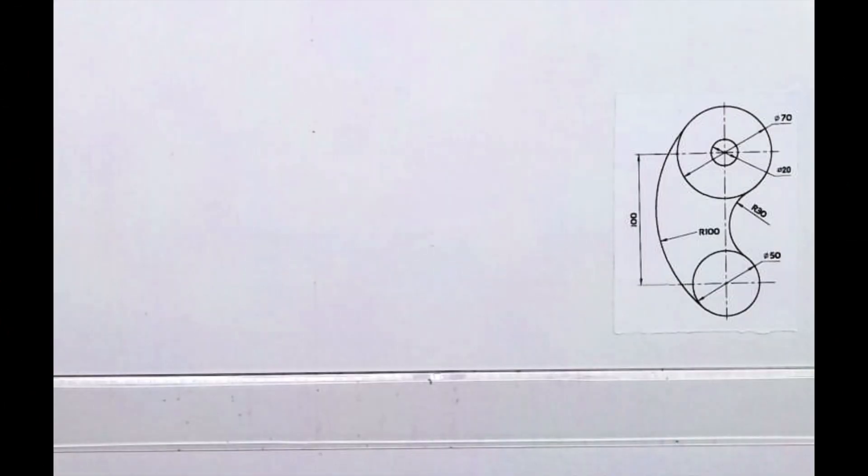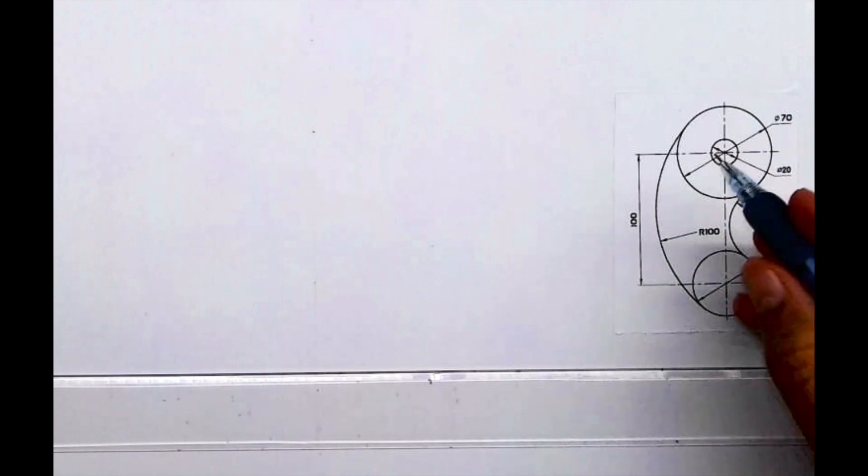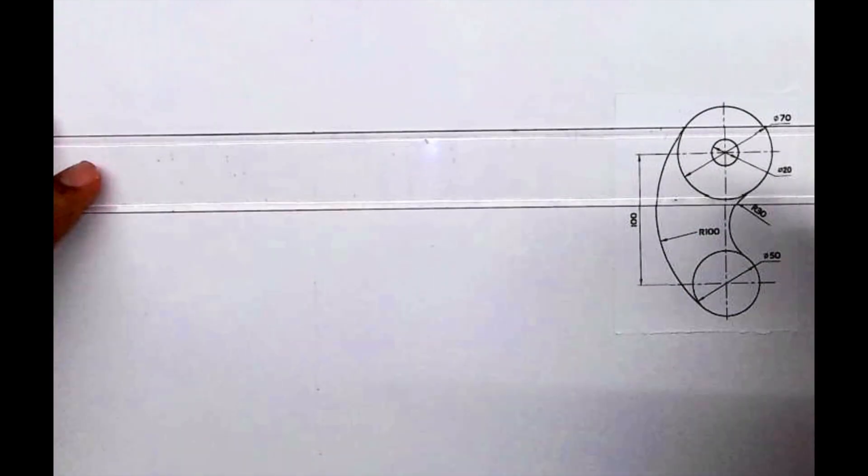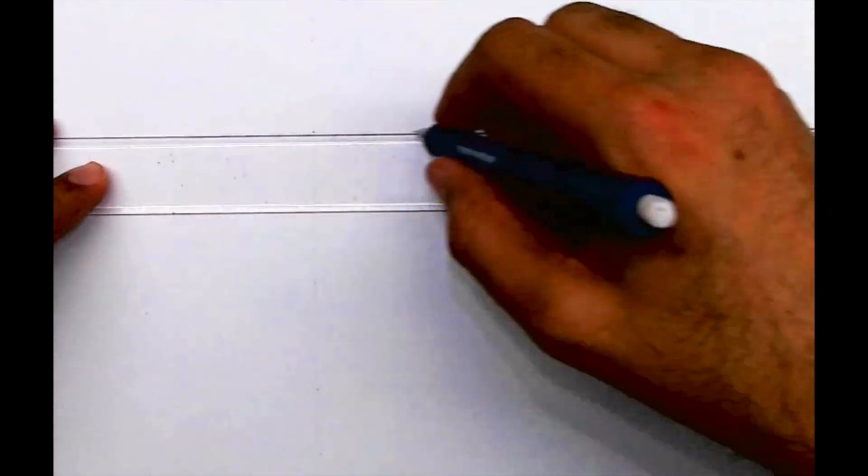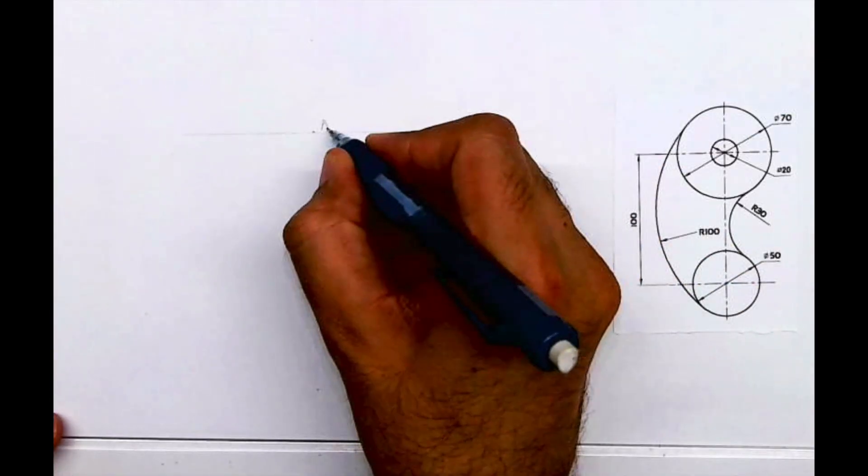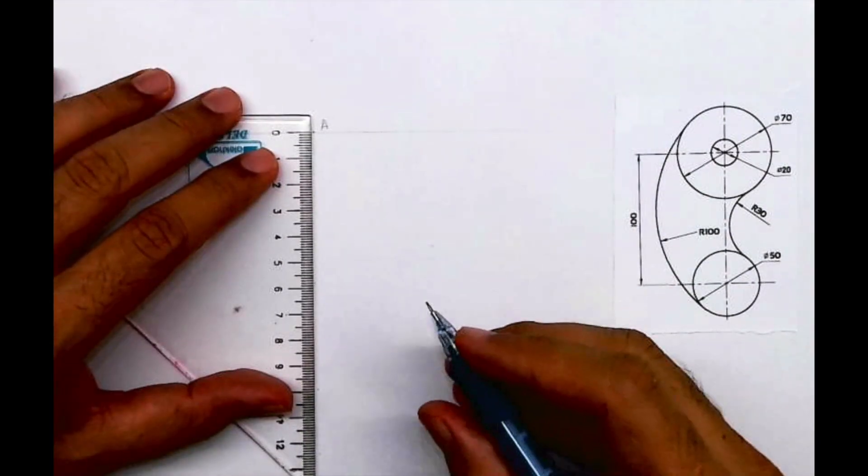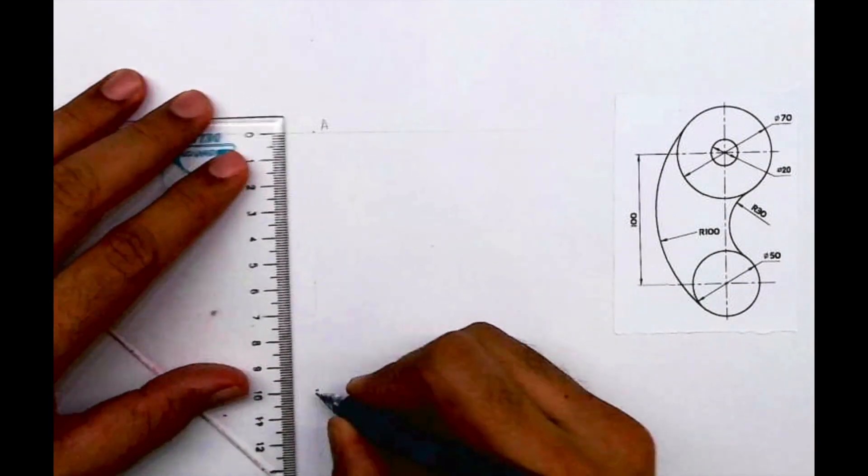Welcome to technical drawing. Today we'll draw this sum. First, we'll draw this line 100 mm long because there are two circles at a distance of 100. Let's take this point as A, and from A to B is 100, so I'll go down by 100 and mark point B.